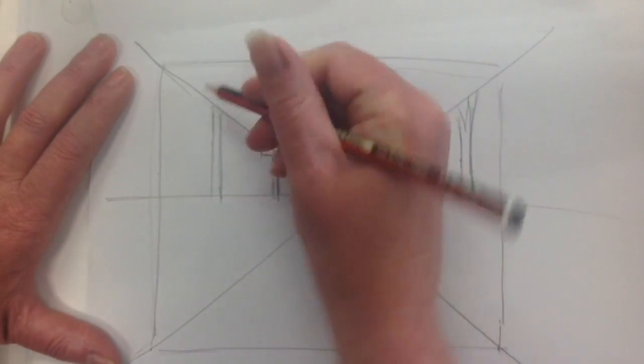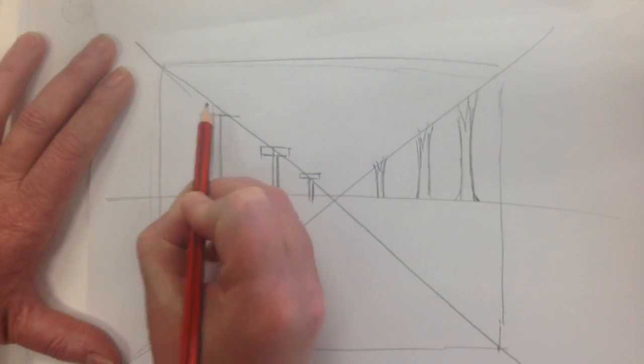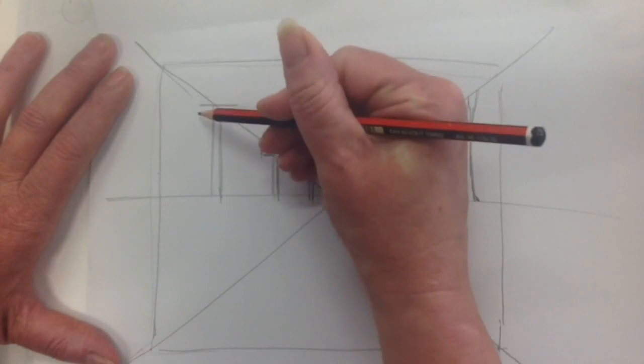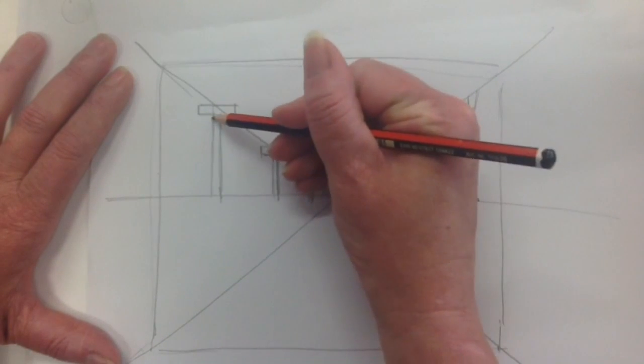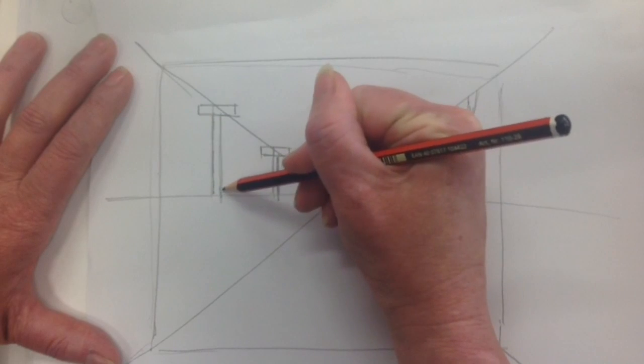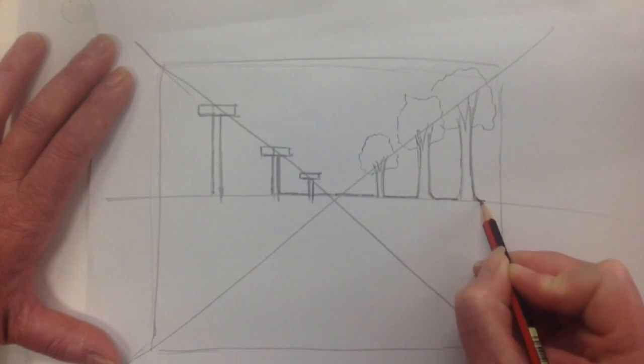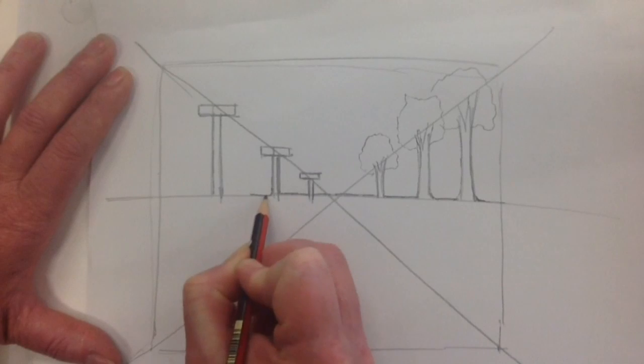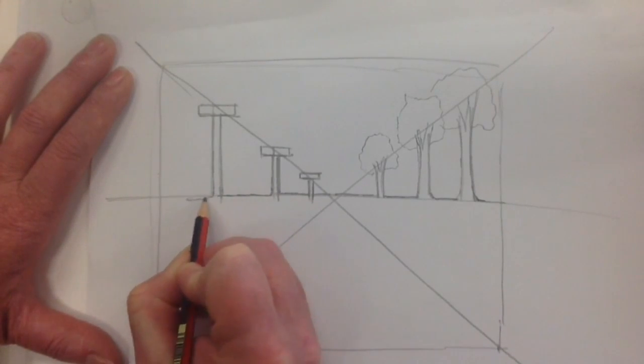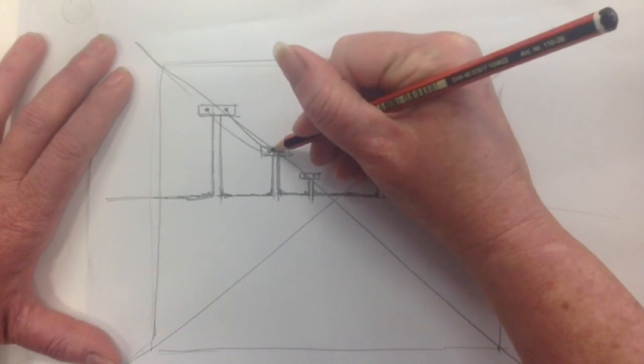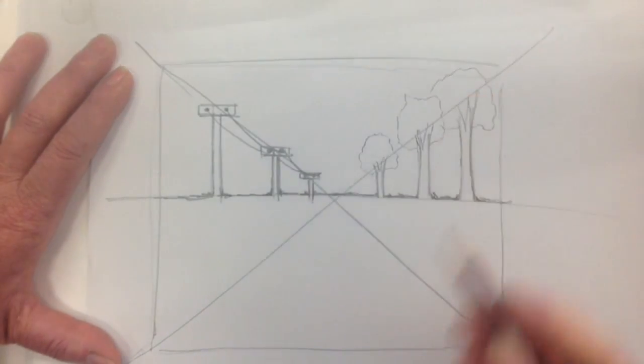You can see here that these are telephone poles on one side and they're bigger closer to us, and on the other side are some trees and they're bigger as they get closer to us. Now this is just very basic - those trees and the telephone pole should come down further, but we're just keeping this nice and simple and putting them all on the horizon line.